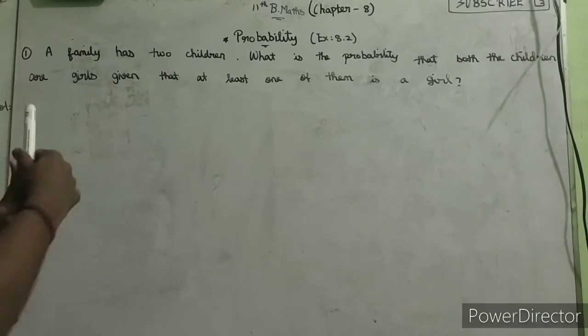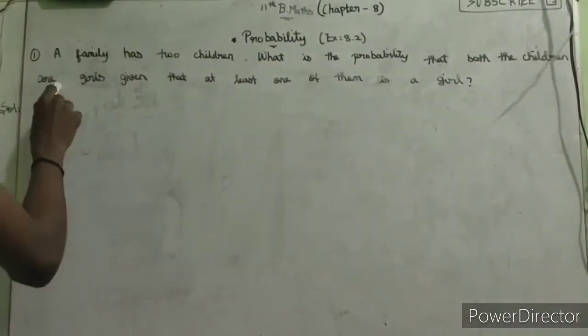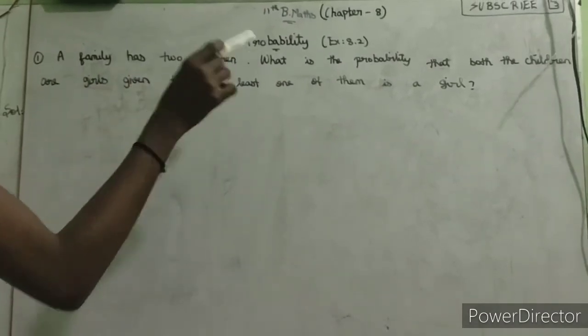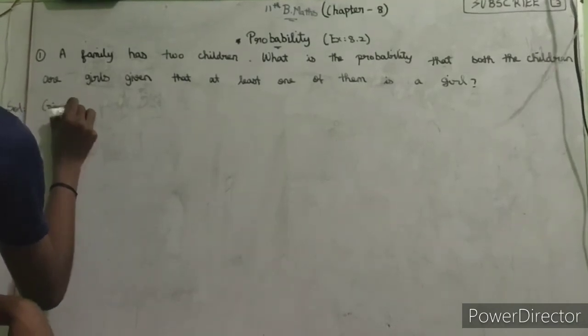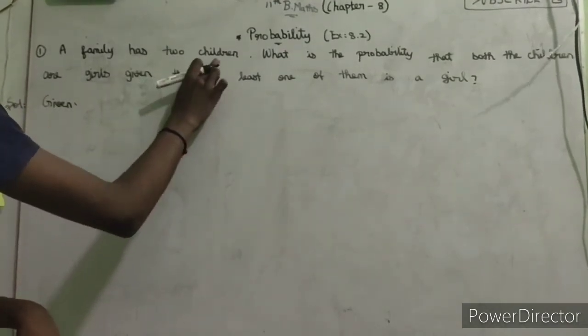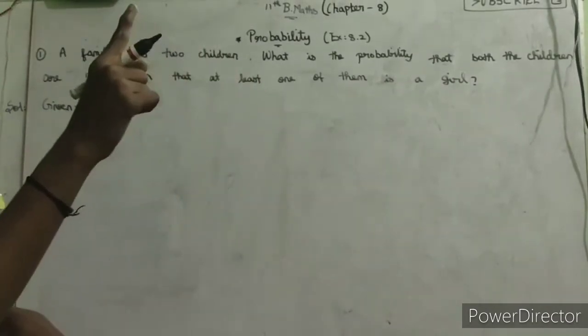First sum. A family has two children. What is the probability that both the children are girls given that at least one of them is a girl? Now let's see. Family has two children. What is the condition? At least one of them is a girl.